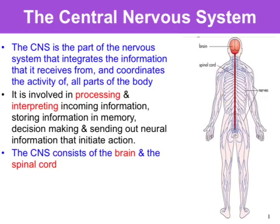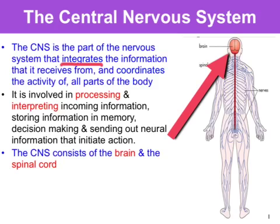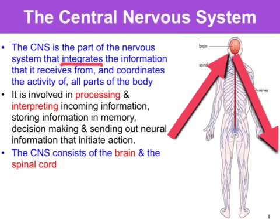Put simply, the central nervous system integrates information it receives from the outside world via the peripheral nervous system and coordinates activity of various parts of the body. So it's involved in processing and interpreting incoming information, as well as decision making and sending out neural information that initiates action. The central nervous system consists of two parts: the brain and the spinal cord.